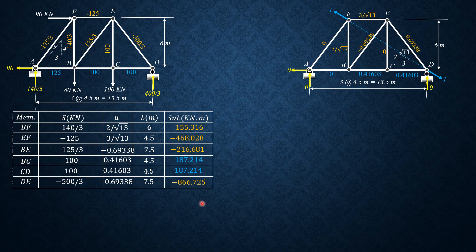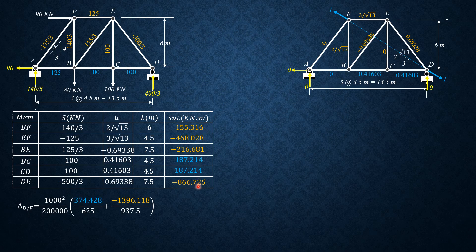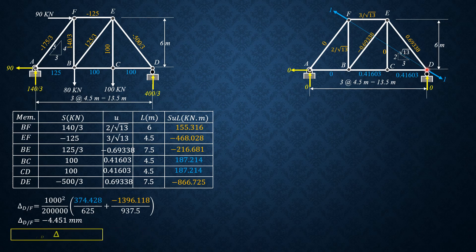The relative displacement between D and F equals (1000 squared / 200,000) times [sum of blue entries divided by area 625 plus sum of orange entries (negative 1396.118) divided by area 937.5]. The result is negative 4.451 mm. Since it is negative, the assumption that D and F move away from each other is wrong — they are actually moving inward, coming closer by 4.451 mm.